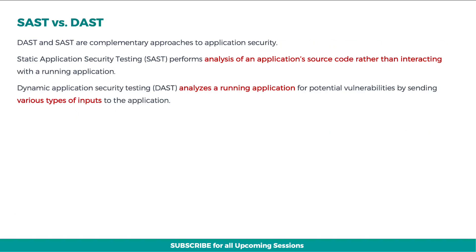Let's understand the difference between the two. DAST and SAST are complementary approaches to application security. Static application security testing performs analysis of an application's source code rather than interacting with a running application. Dynamic application security testing analyzes a running application for potential vulnerabilities by sending various types of inputs to the application.